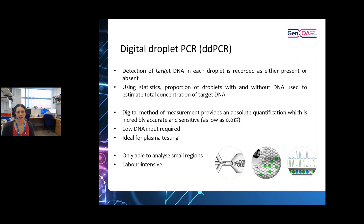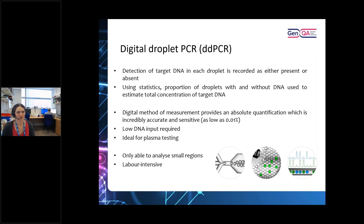Digital droplet PCR is a more targeted assay that looks at each individual copy of DNA. By running this and using statistics and proportions across hundreds of thousands of droplets, you can get a really good quantitative estimate of your mutation levels. Because it goes down to single copy analysis, it can be validated down as low as 0.01%. It equally doesn't require much DNA input, so if you've got very small amounts of material, it's a good option — ideal for things like ctDNA. However, you can only look at a very small number of regions, and you need a different design for each variant, making it quite labour intensive for the amount of information it gives.